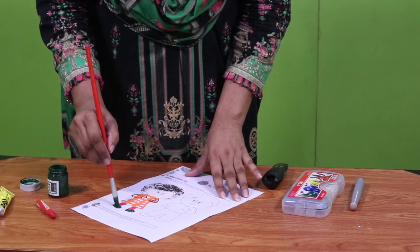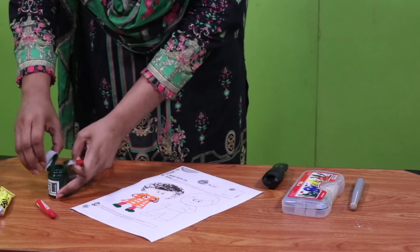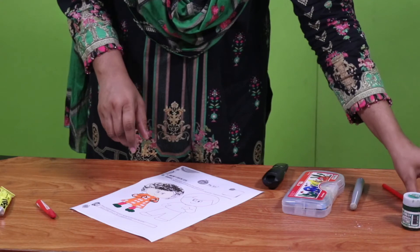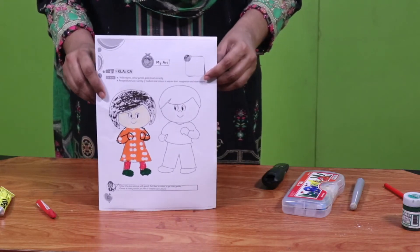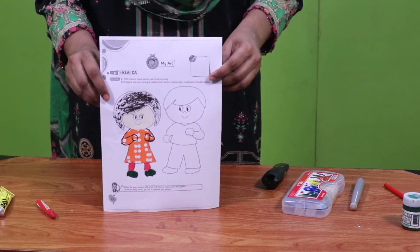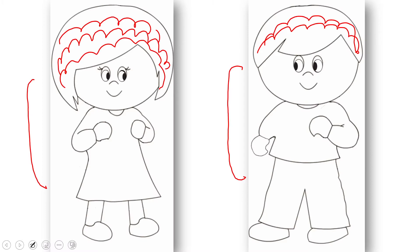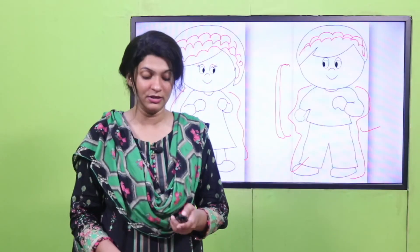بہت دھیان رہے کہ designated place سے باہر paint نہ نکلے۔ I am going to put the lid back and the brush away تاکہ باقی چیزیں خراب نہ ہوں۔ Let me show you the picture — this is me! I hope you all are enjoying. I have dressed up like a princess. So آپ نے screen پر ایک لڑکی اور ایک لڑکا دیکھا — if you are a boy, choose the boy; if you are a girl, choose the girl.